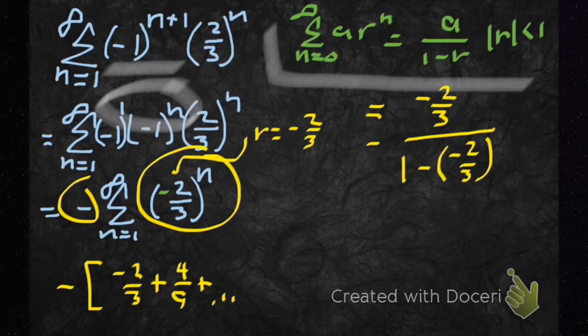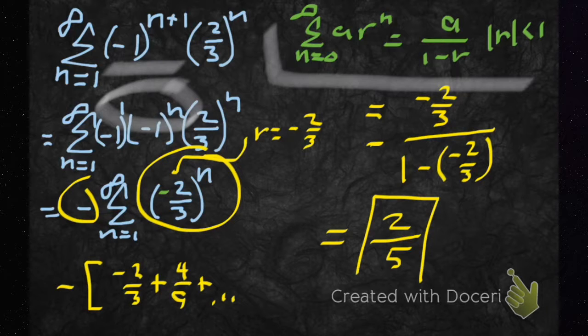If I add my fractions right, I still have a minus out front, and I get two fifths. Done. Box and flower.